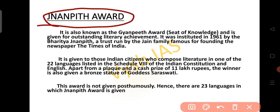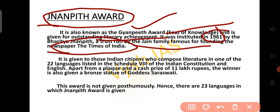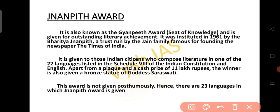The Jnanpith Award, also known as the seat of knowledge, is given for outstanding literary achievement. It was instituted in 1961 by Bharatiya Jnanpith, a trust run by the Jain family famous for founding the Times of India. The award is given to Indian citizens who compose literature in one of the 22 languages listed in Schedule 8 of the Indian Constitution and English. Awardees receive a plaque, a cash prize of 11 lakh rupees, and a bronze statue of Goddess Saraswati. This award is not given posthumously, and there are 23 languages for which the Jnanpith Award is given.